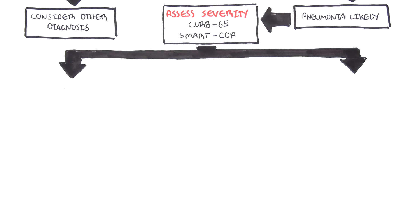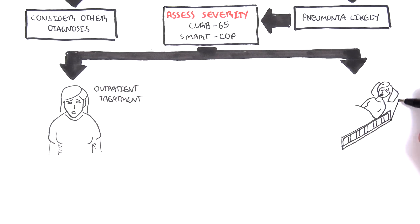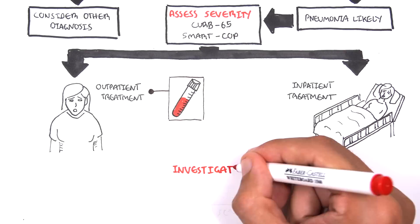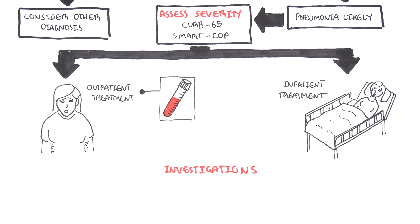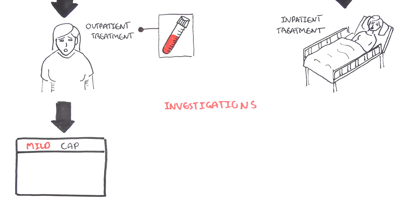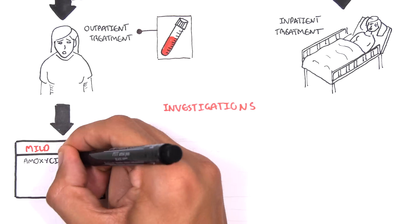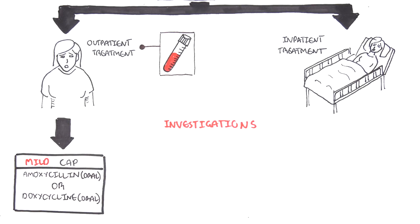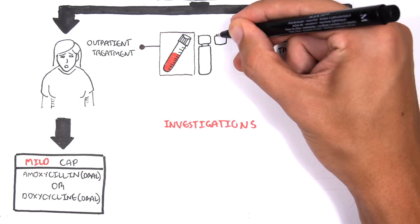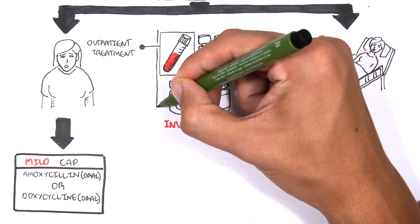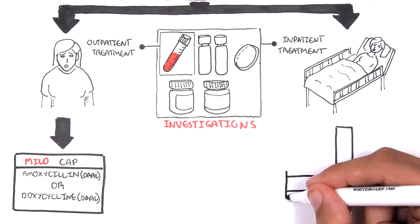Depending on the severity, patients can be treated as an outpatient or as an inpatient. Investigations for mild severity include just bloods such as full blood count. If all point to mild community-acquired pneumonia, treat with amoxicillin oral and/or doxycycline. For patients who require hospitalization, perform other investigations such as blood cultures, sputum cultures, and possibly other specific microbiological tests.